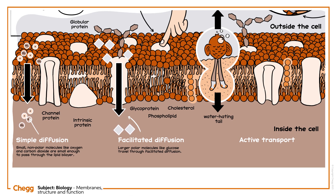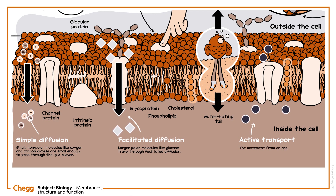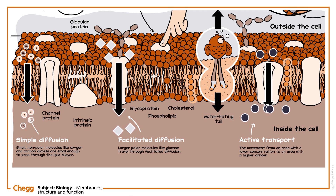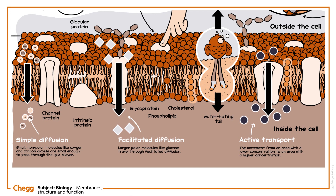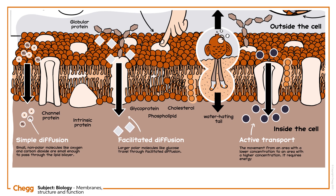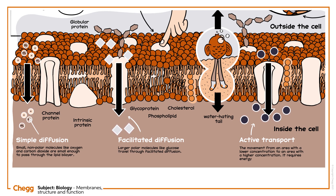Finally, there's active transport: the movement from an area with a lower concentration to an area with a higher concentration. This movement is against the concentration gradient, and so it requires energy. Carrier proteins, which consume energy from ATP, support active transport.